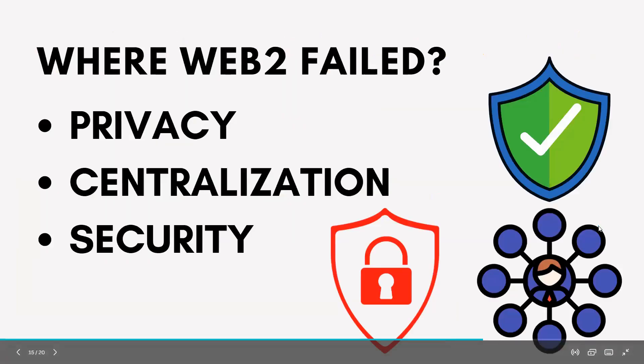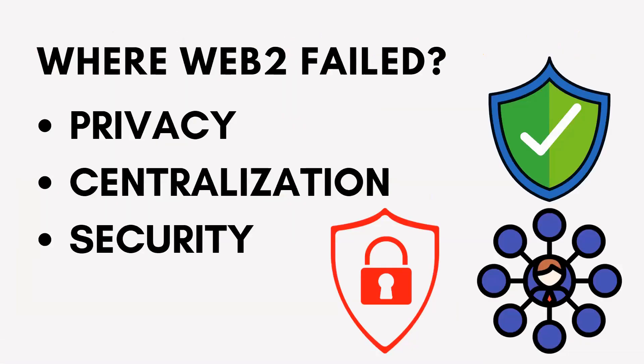So basically, Web 2 is a more enhanced version of Web 1. It is a read-write and interactive web where most of the content is user-generated. Now, when everything seems good in Web 2 and we can monetize our own content, where did Web 2 fail?